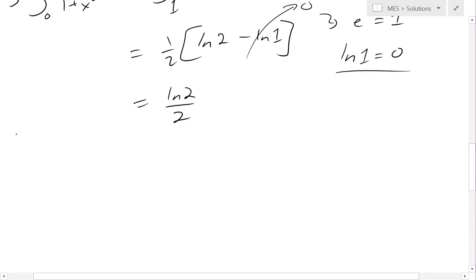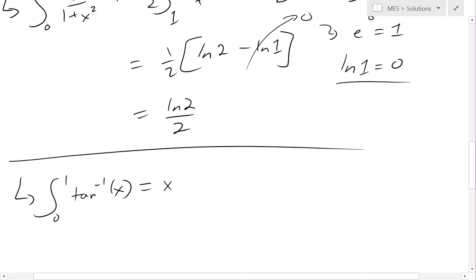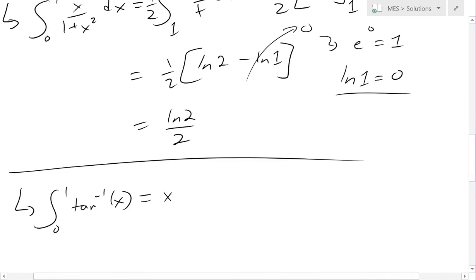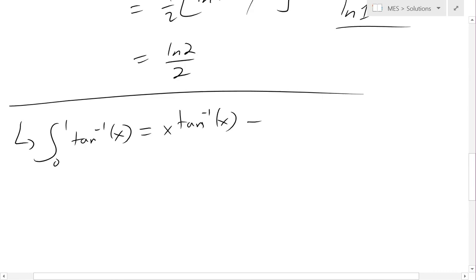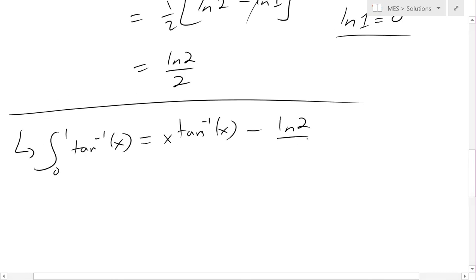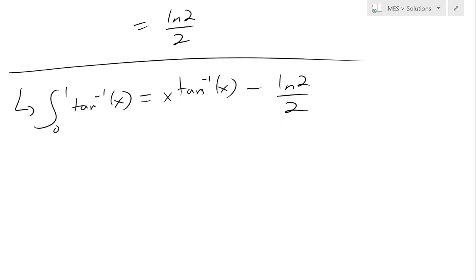So we get our final integral. Integral from 0 to 1 of inverse tan of x equals, so now this is going to be x tan inverse tan of x minus now this ln 2 over 2, and this is from 0 to 1.